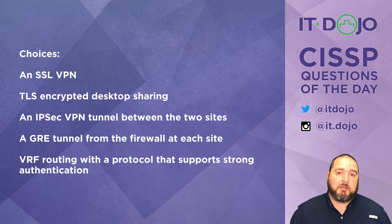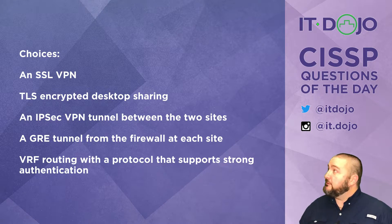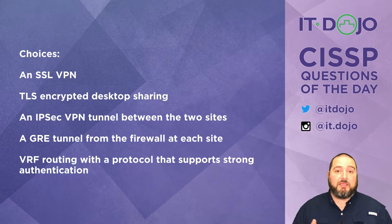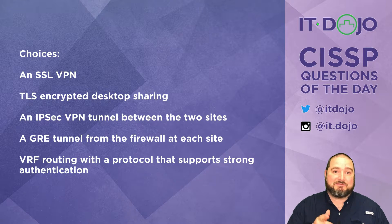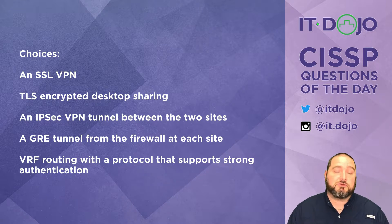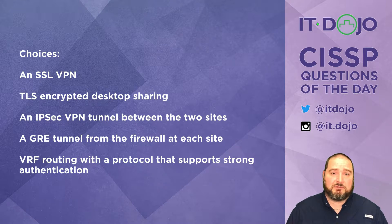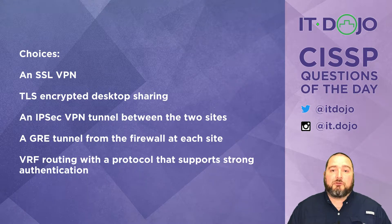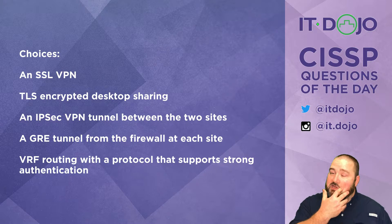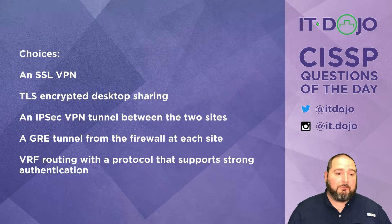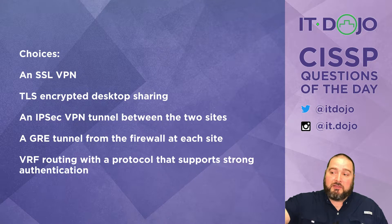The first option says to use an SSL VPN to join those sites together — that is generally not true. SSL VPNs are fantastic for providing users remote connectivity back into the office for selected applications, but if you're talking about making entire sites available to one another, SSL VPNs are not the way we do it.